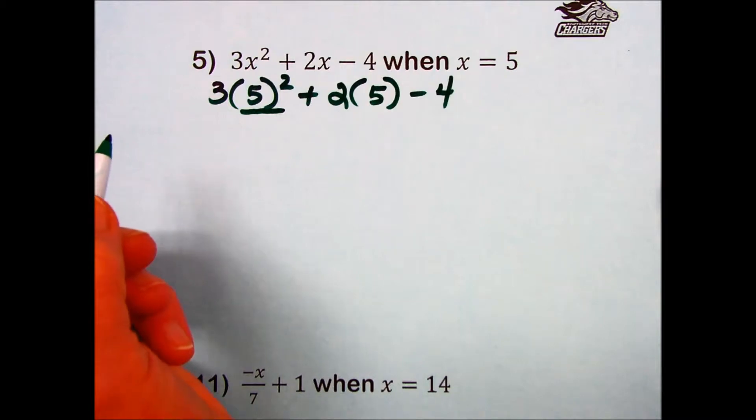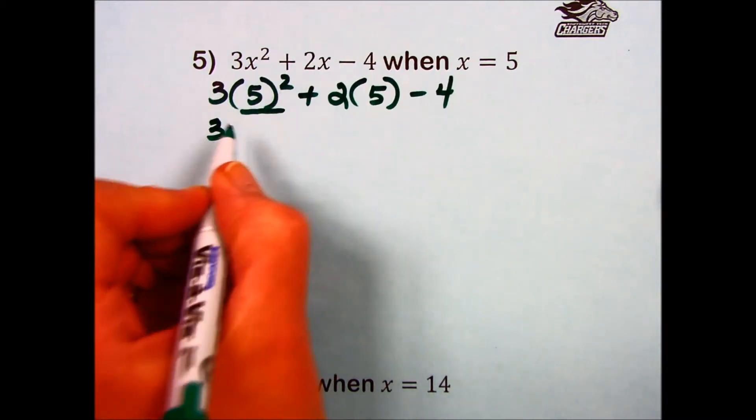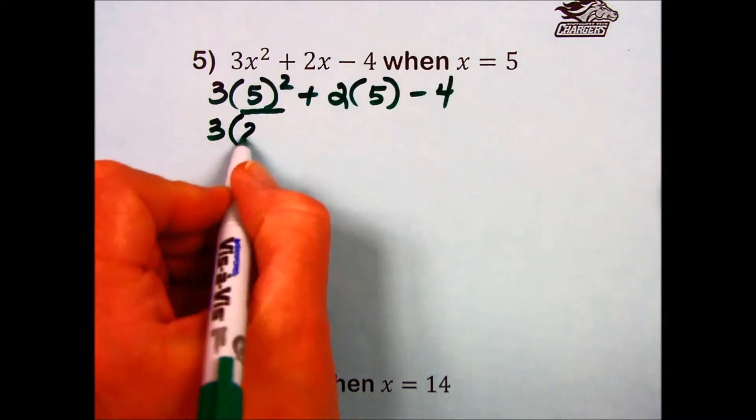Power is the highest priority operation here. 5 to the second power means 5 times 5, which results in a 25.